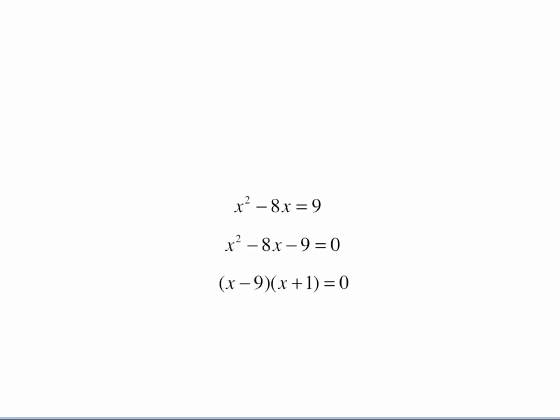This will factor as x minus 9 times x plus 1. Set each part equal to 0, and then solve. Add 9 to both sides, subtract 1 from both sides, and we have 9 and negative 1.